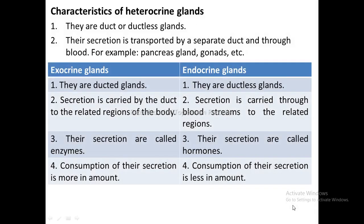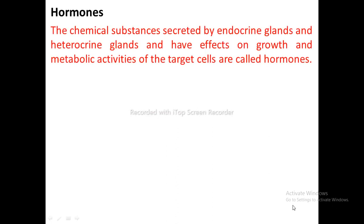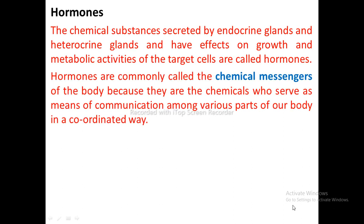Differences between endocrine and exocrine glands: Exocrine glands are ducted whereas endocrine glands are ductless. Secretion of exocrine glands is carried by duct to related regions, whereas endocrine secretion is carried through the bloodstream. Secretions of exocrine glands are called enzymes whereas secretions of endocrine glands are called hormones. Consumption is more in exocrine glands and less in endocrine glands. Hormones are chemical substances secreted by endocrine glands that affect growth and metabolic activities, and are commonly known as chemical messengers of the body.